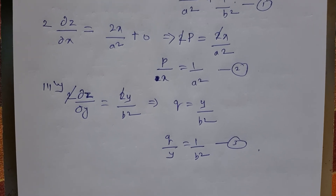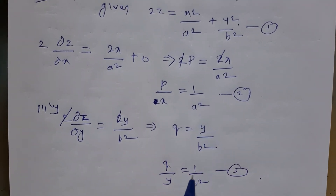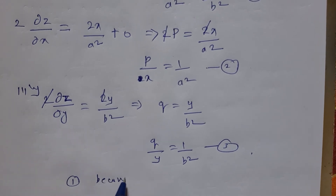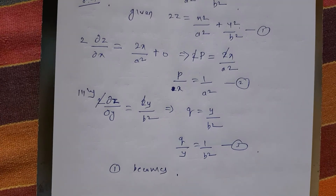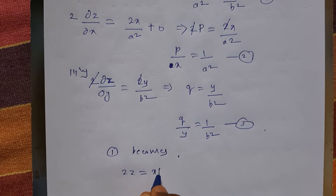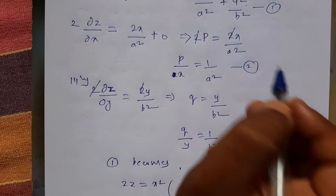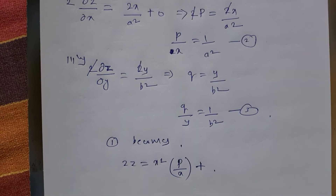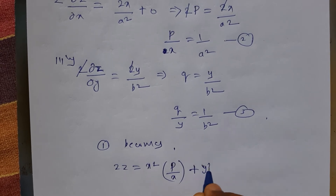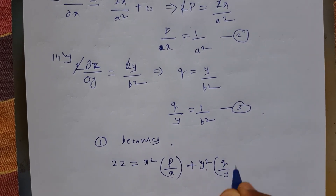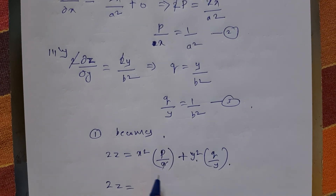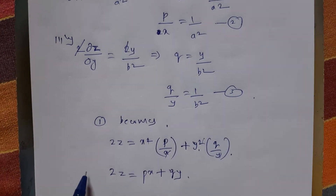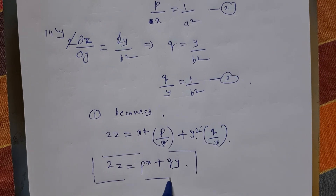Now I eliminate the arbitrary constants by substituting 1/a² = p/x and 1/b² = q/y into equation number 1. Equation 1 becomes: 2z = x²·(p/x) + y²·(q/y). Simplifying, x² and x cancel giving xp, and y² and y cancel giving yq. Therefore 2z = px + qy. This is the required partial differential equation.